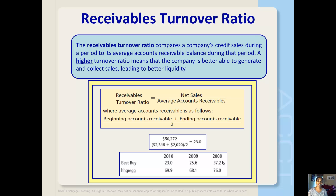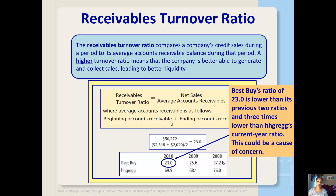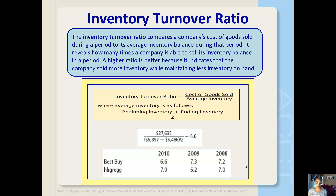The receivables turnover ratio compares a company's credit sales during a period to its average accounts receivable balance during that period. A higher turnover ratio means that the company is better able to generate and collect sales, which leads to better liquidity. Best Buy has a receivables turnover ratio of 23, meaning 23 times a year all of their invoices have been paid by their customers. That doesn't mean that at any one time they have no outstanding accounts receivable — it's just a theoretical measure. This is much lower than HH Gregg, so this might be a concern for Best Buy.